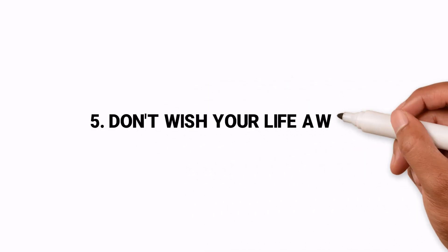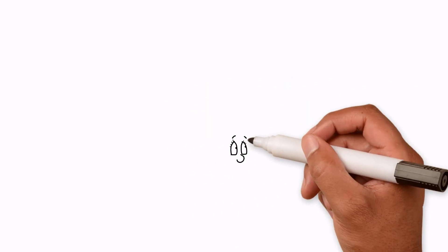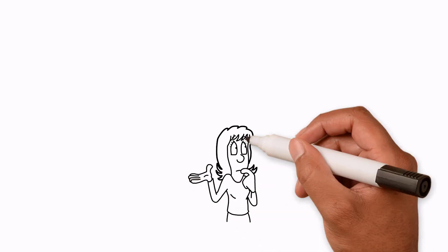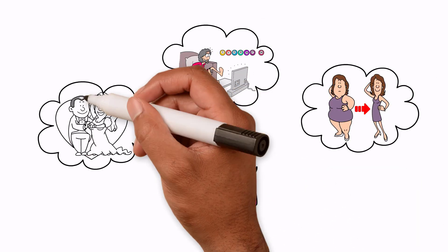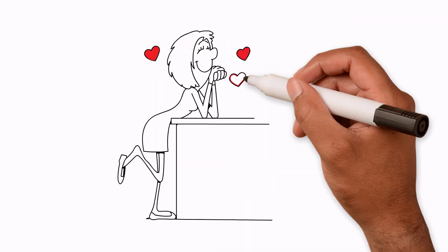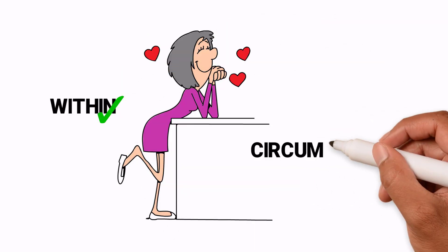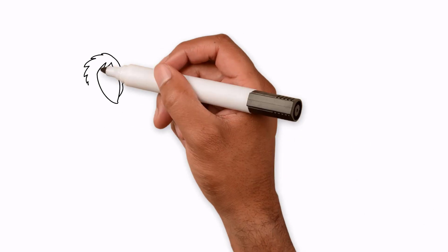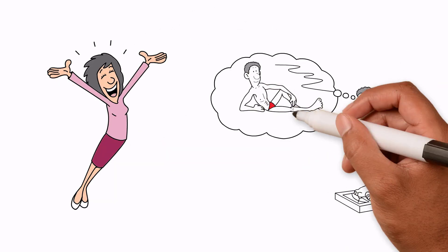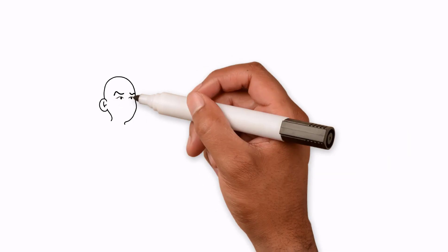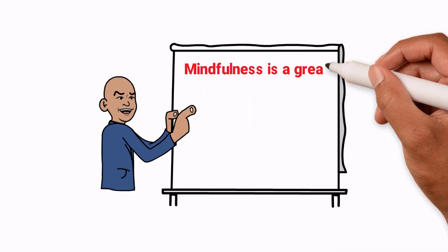5. Don't wish your life away. Be honest. How often have you thought that you'd finally be happy if you won the lottery, lost a stone, got married? It's all nonsense. True happiness comes from within you, not as a result of circumstances. You need to start living in the moment and stop letting your happiness depend on things that frankly might never happen. Mindfulness is a great way to connect to the present.